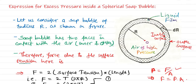The force due to surface tension — since we have two surfaces which are in contact with the air — therefore the force will be twice times the surface tension into length. Using the basic definition: surface tension T equals force per unit length, so force equals T into length. Since we have two surfaces, force = 2 × T × length.